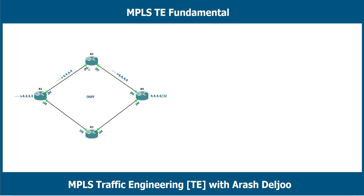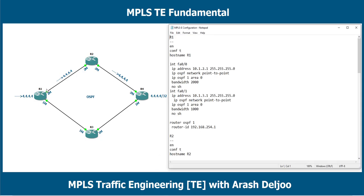We have R1, R2, R3, and R4 connected to each other, and we have OSPF as the IGP routing protocol in this scenario. I configured this scenario before, and here we can see the configuration of R1, R2, R3, and R4. I configured the interface FastEthernet 0/0 of R1.